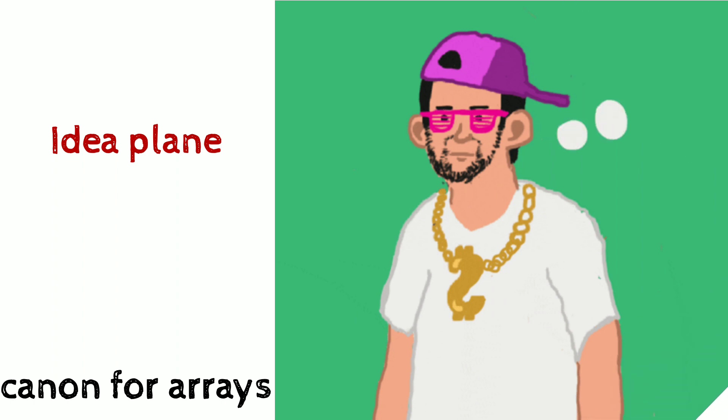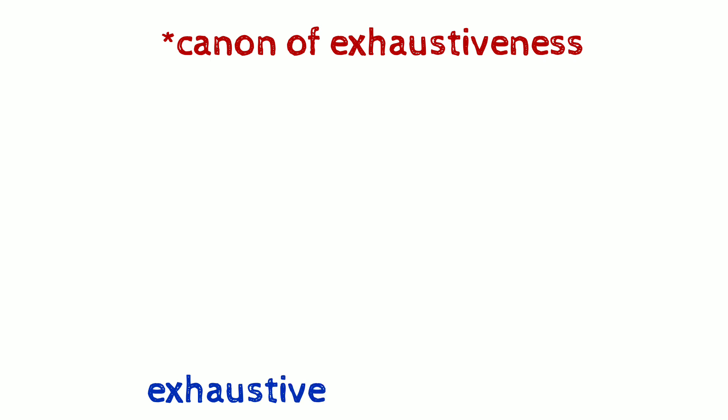The first Canon for Arrays is the Canon of Exhaustiveness. Exhaustiveness means that everything is already filled, which is called Exhaustiveness. Canon for Arrays says that it is an Array in which all of the eligible members are included and no one is left out.